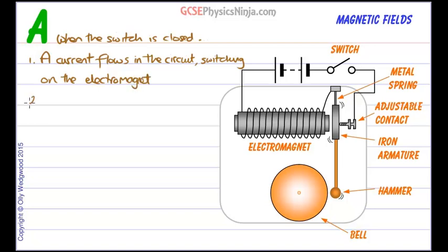Number two, the iron core becomes magnetized and attracts the iron armature. The iron armature is on a spring so it can be pulled inwards.